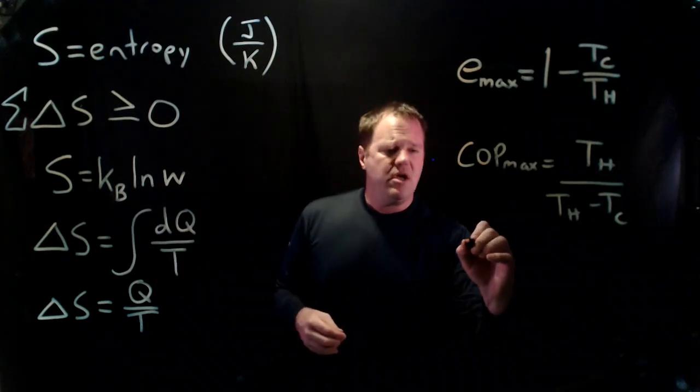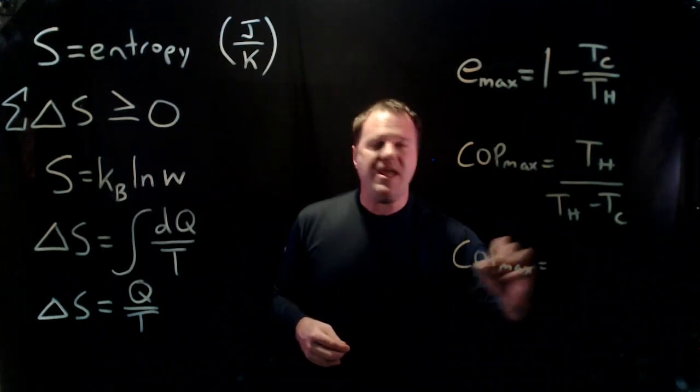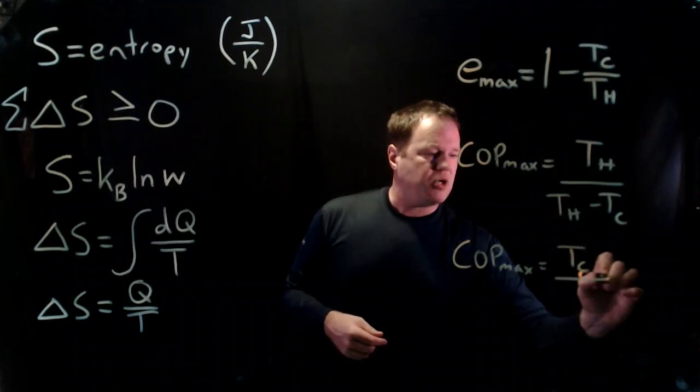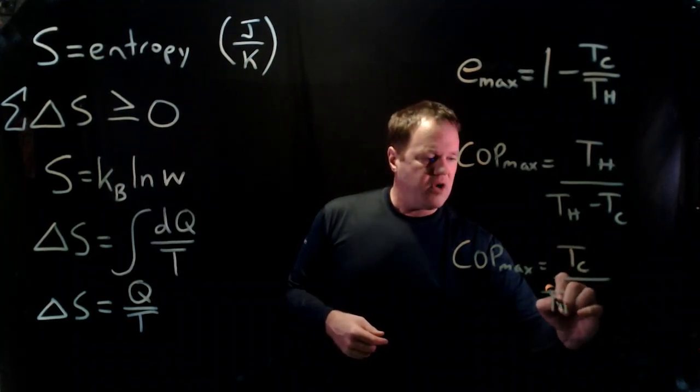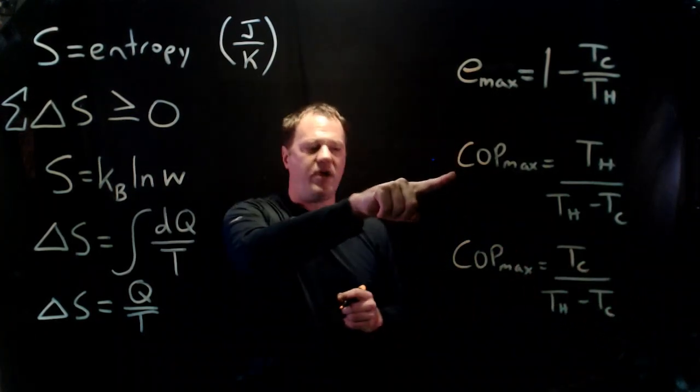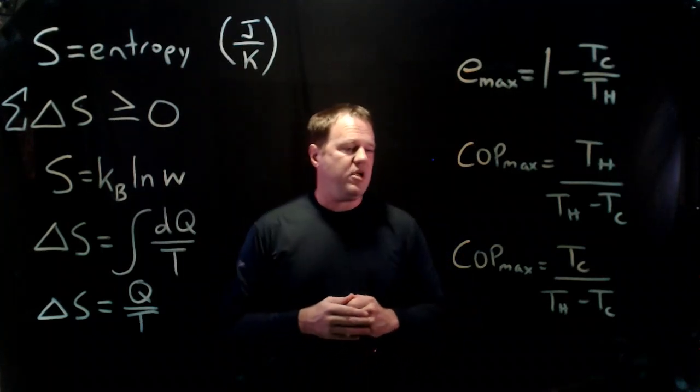And then you would have the maximum coefficient performance of a heat pump used for cooling. We would replace the high temperature with the low temperature in the numerator, and we would get something like this. So heat pump used for heating, heat pump used for cooling, such as a refrigerator or air conditioner. That would be your maximum.